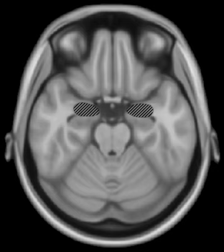The motor and auditory areas are located in the cerebrum of the brain. The motor area processes the rhythm of music and is located in the parietal lobe, which also deals with orientation, recognition, and perception.